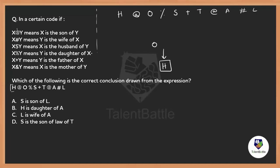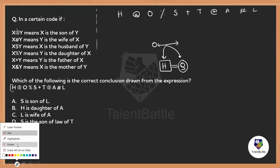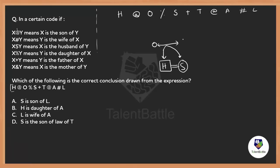O % S means S is the daughter of O. So S is the daughter, meaning O must have a spouse, and their two children are H and S — they are siblings. Next, S + T means T is the father of S, so T is the father and O would be the mother. Then T @ A means T is the son of A.